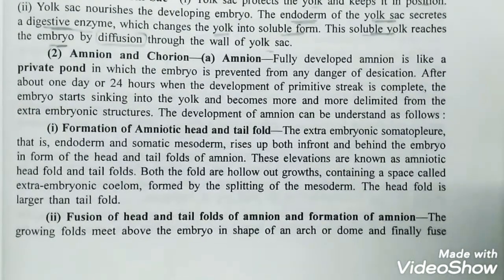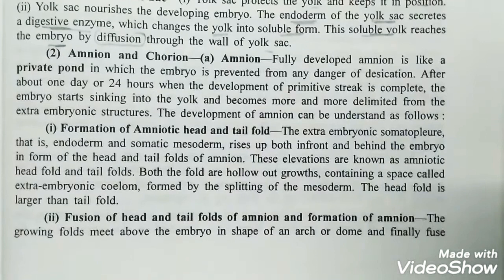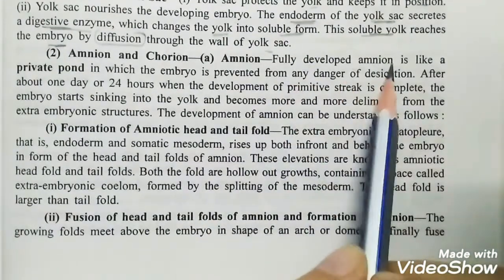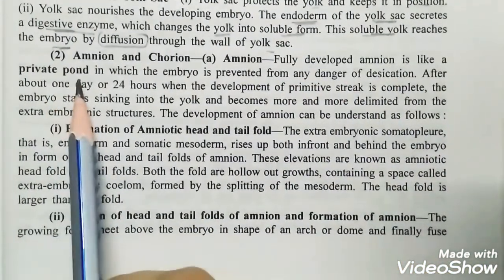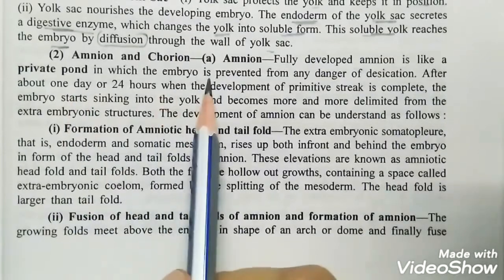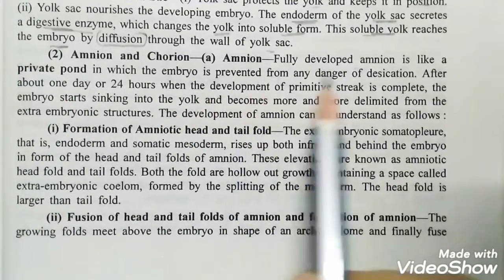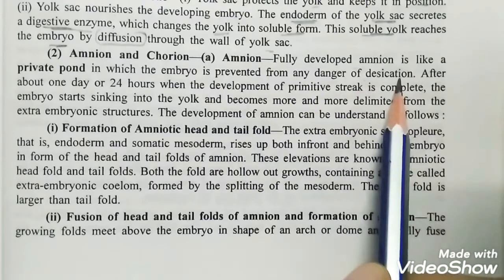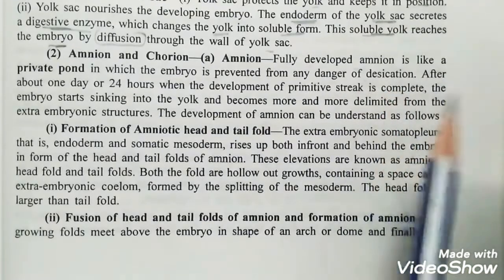Next we have amnion and chorion. Amnion is a membrane. A fully developed amnion is like a private pond, in which the embryo is completely protected from every danger of desiccation.